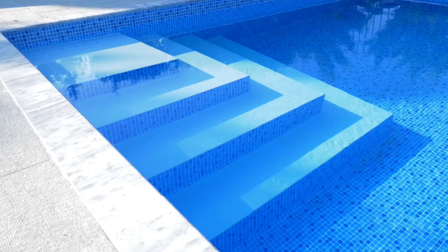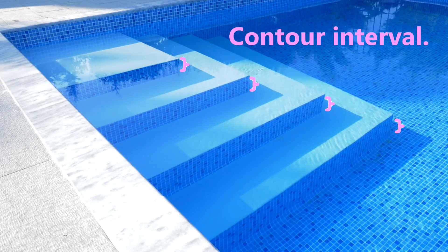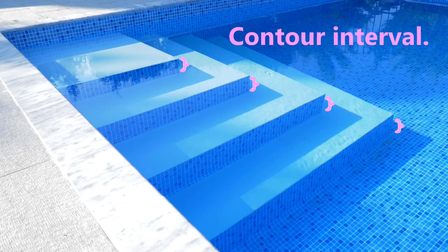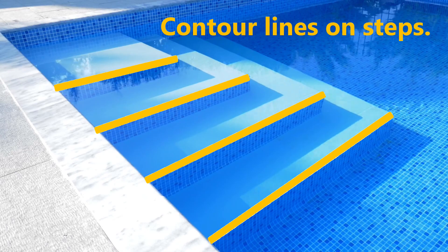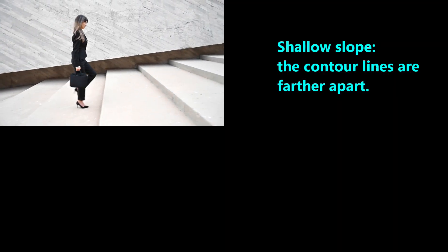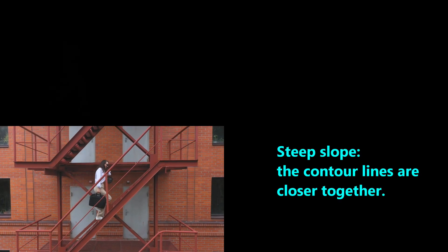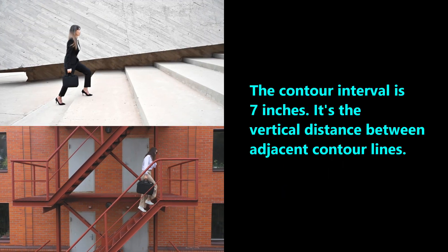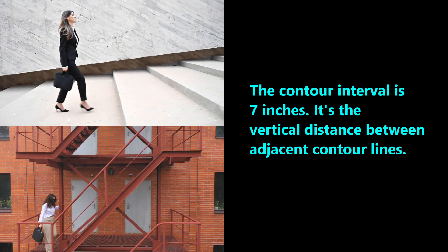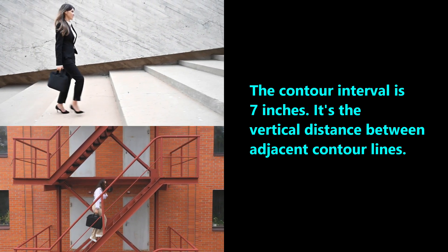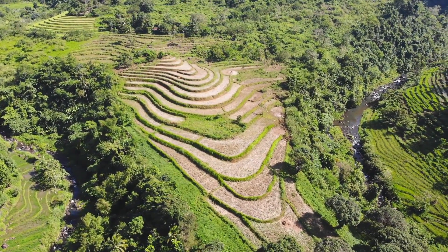One way to remember this pattern is to think of stairs. Each step has the same height as the other steps in the stairs, so we can think of a step's height as being the same thing as a contour interval. Then we can imagine contour lines along the front edge of every step. If the stairs have a shallow slope, the contour lines are farther apart from each other. But if the stairs have a steeper slope, the contour lines are closer to each other. The contour interval is always equal for a set of contour lines — in this case, all steps have a vertical height of 7 inches. The green edges of these rice terraces have the same vertical distance, so we can think of them as contour intervals.